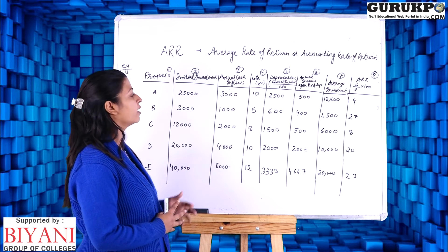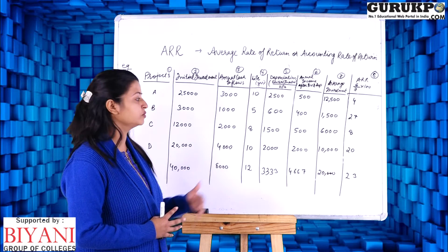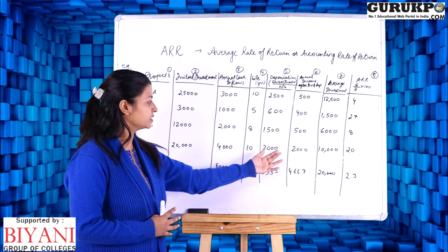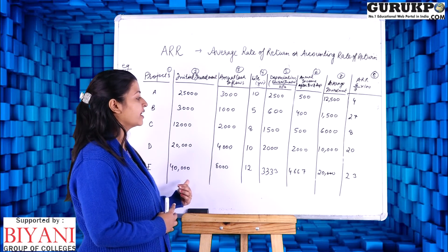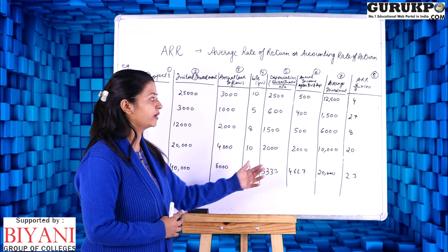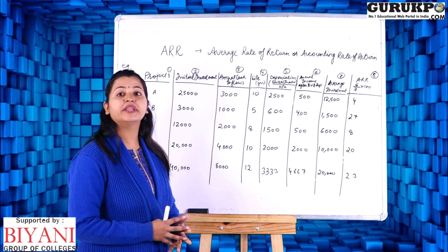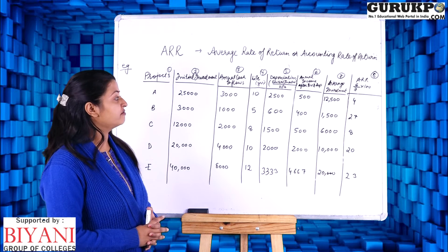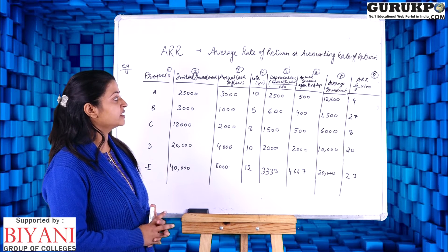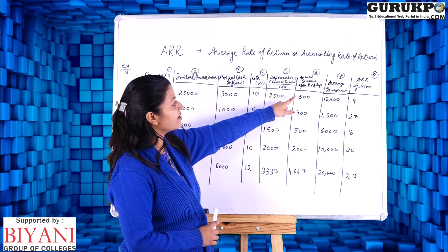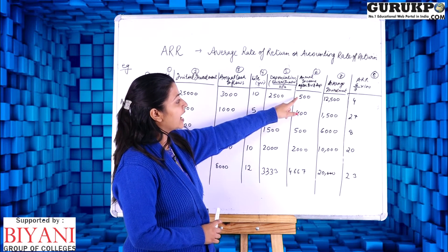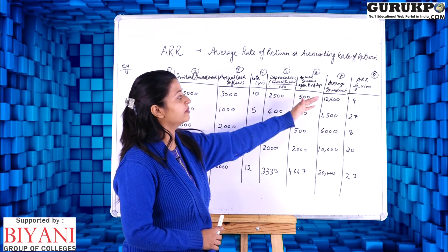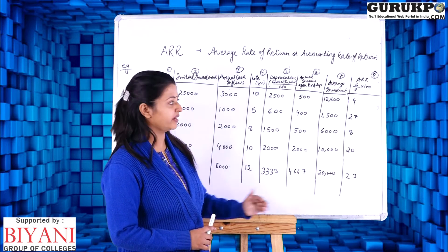For C: 12,000 divided by 2 = 6,000. For D: 20,000 divided by 2 = 10,000. For E: 40,000 divided by 2 = 20,000. Now we calculate the average rate of return using the formula: average annual income after tax and depreciation divided by average investment, into 100.